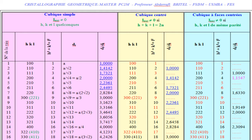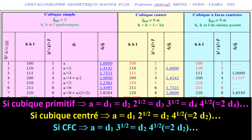Once the mode is identified, we can also determine the approximate value of the lattice parameter. If the mode is primitive, the lattice parameter is simply D1. If the mode is body-centered, the parameter equals D1 × √2, since D1 in the BCC case equals a/√2. And if the mode is face-centered cubic, the lattice parameter corresponds to D1 × √3, since the interplanar distance of the first peak (1,1,1) is a/√3.